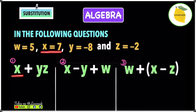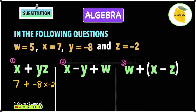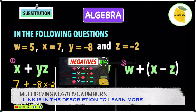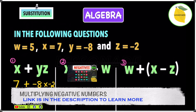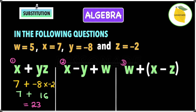We know that x equals 7, so we substitute a 7 for x. Next we substitute for yz — and as we know, yz is the same as y times z. We know that y is minus 8 and z is minus 2, so we do minus 8 times minus 2. Now we have 7 plus minus 8 times minus 2. According to BIDMAS, multiplication comes first, so minus 8 times minus 2 equals 16. Then 7 plus 16 gives an answer of 23.